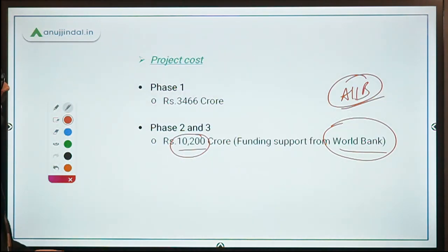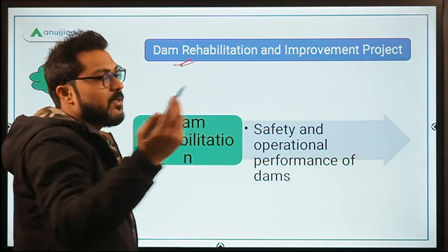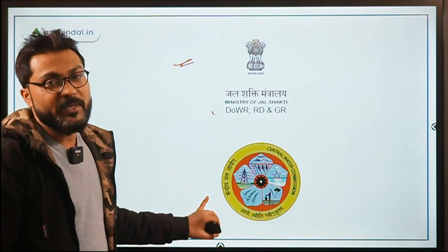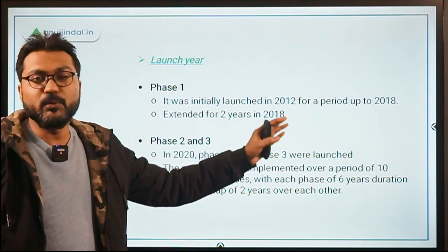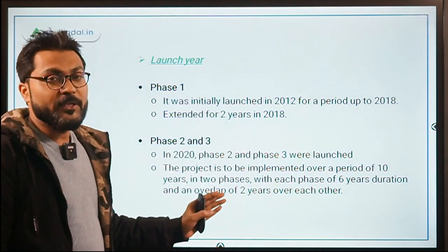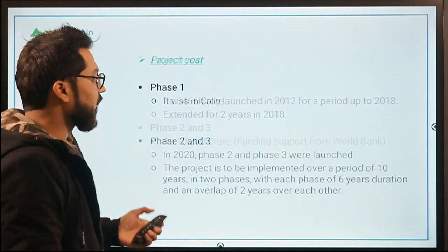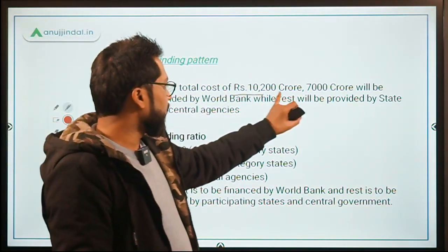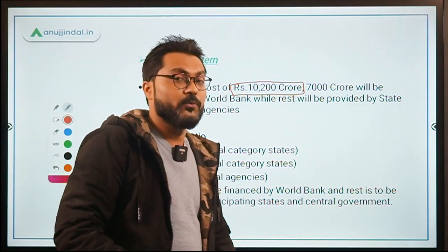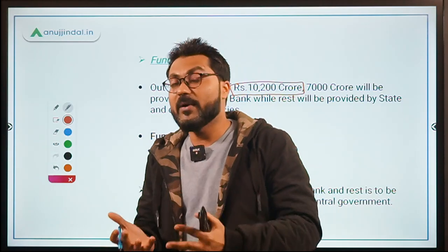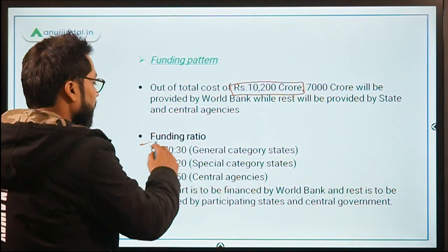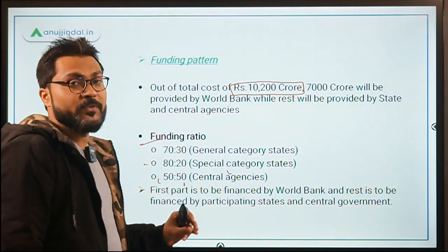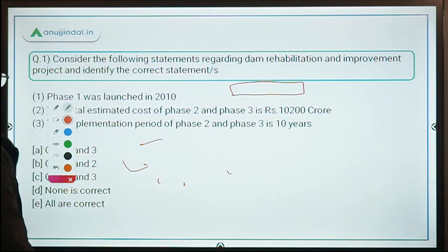Quick revision: DRIP's objective is to rehabilitate dams and improve their safety and operational performance. Ministry is Ministry of Jalshakti; implementing agency is Central Water Commission. Phase one was launched in 2012 up to 2018, extended to 2020. Phase two and three were launched in 2020 for 10 years with a total cost of 10,200 crore. World Bank provides approximately 7,000 crore; the rest 3,200 crore by central and state governments. Funding ratios: 70:30 (general), 80:20 (special), 50:50 (central agencies). Four components and the DHARMA app.